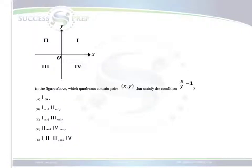To solve a question like this on the SAT, the key idea is to understand the types of x and y values that exist in quadrant 1, quadrant 2, quadrant 3, and quadrant 4.